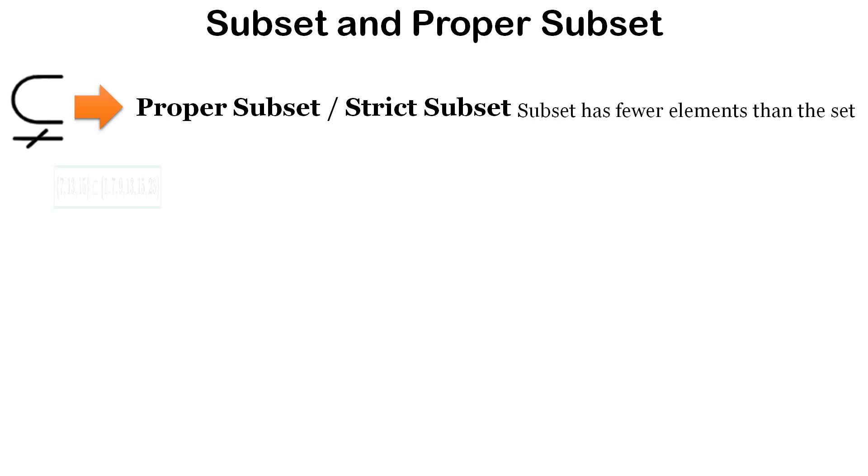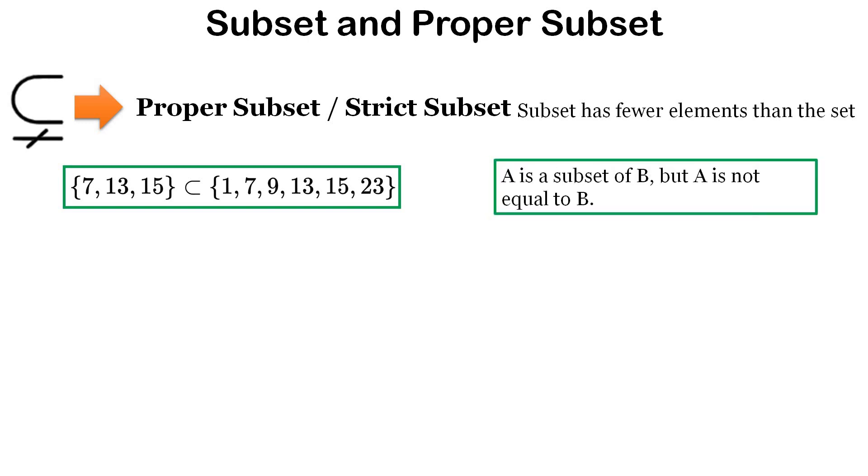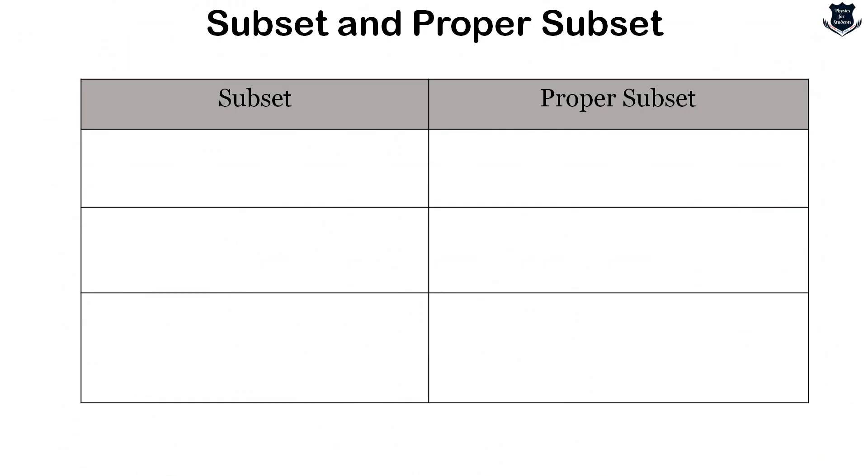A proper subset or strict subset has fewer elements than the set. This is an example showing A is a subset of B but A is not equal to B, because B has certain other elements.